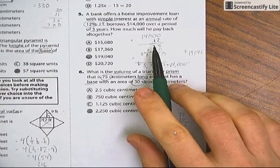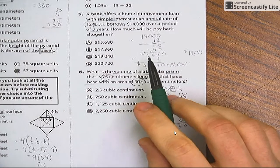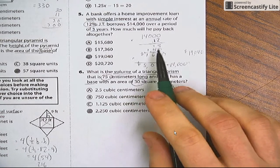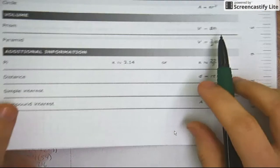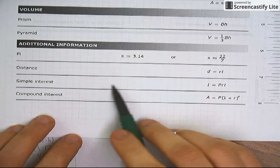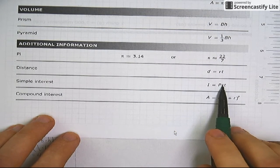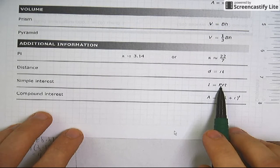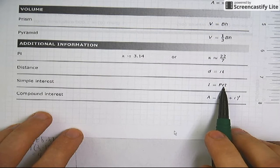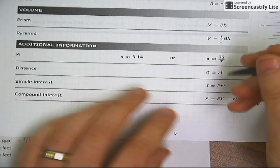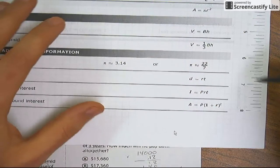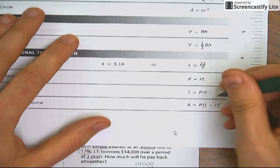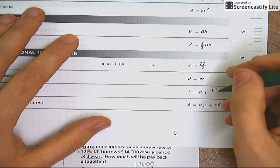Okay. Just to remind you with number five, I forgot to mention, this is on your star reference sheet. Simple interest. It tells you exactly how to do it. So your interest is your principal. That's how much money you start out with times your rate times your time. So for us, it would have been 14,000.